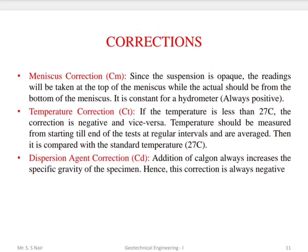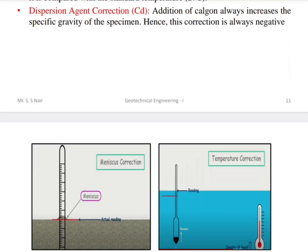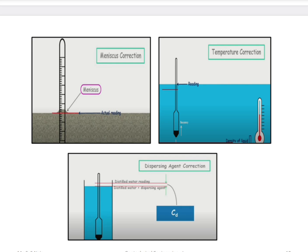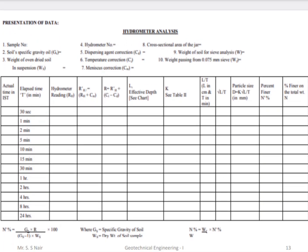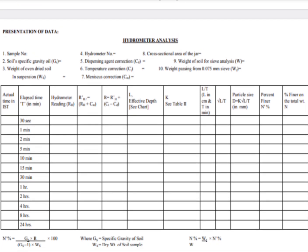Temperature should be recorded from start to end at regular intervals and averaged. Dispersing agent correction: adding calgon always increases the specific gravity of the specimen, so this correction is negative. So the three corrections applied are the meniscus correction, temperature correction, and dispersing agent correction. Hydrometer readings are recorded at time intervals of 30 seconds, 1 minute, 2 minutes, 5 minutes, 10 minutes, and 15 minutes, and corrected accordingly.